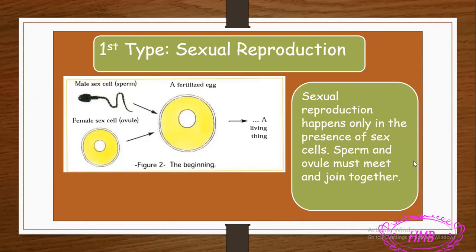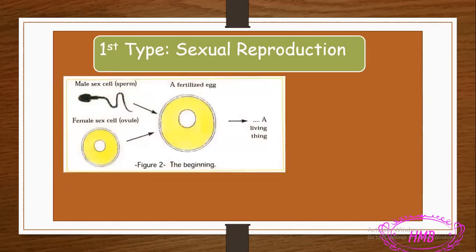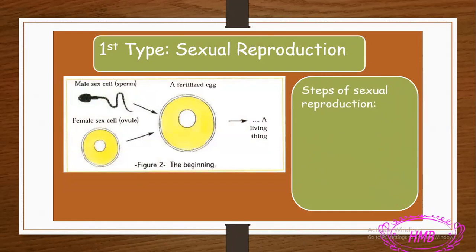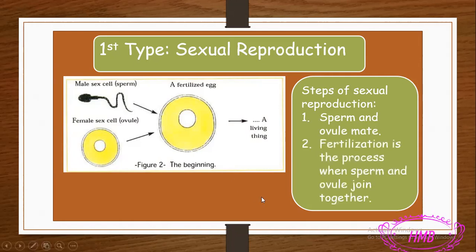For sexual reproduction to happen, sperm and ovule must meet and join together. One sperm and one ovule, when they meet, produce one cell which is called the fertilized egg.